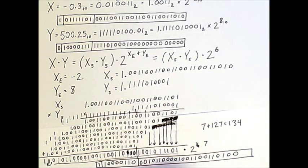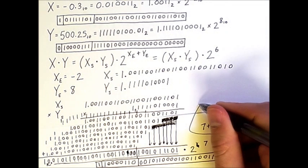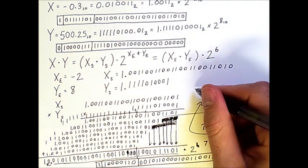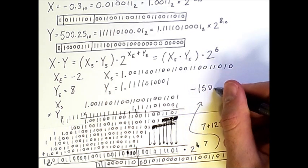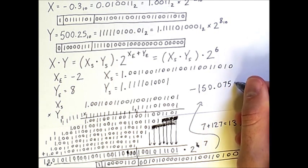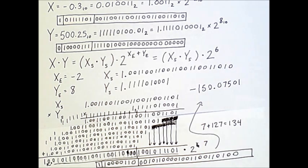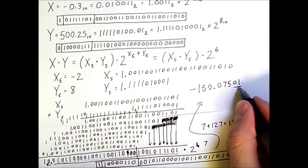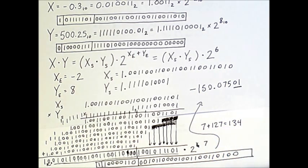So this sequence of bits is the floating point representation for our multiplication. And if we convert this back into decimal, we will actually get negative 150.075.01. So this little bit of rounding error here was introduced. The actual result did not have these last two decimal positions.